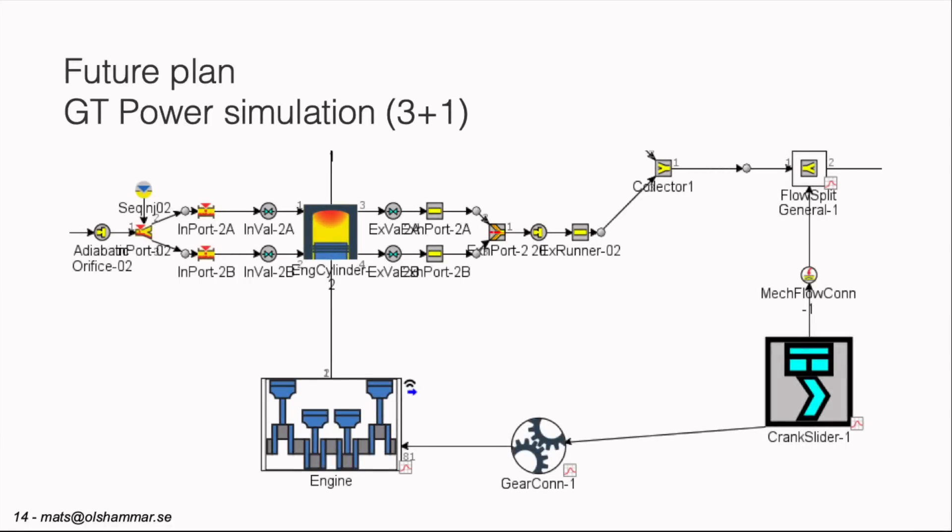And the future plan is to make new computer simulations in GT power. So a setup with three combustion cylinders would look like this. We only see one combustion cylinder here. But then we have from the crankshaft of that one we have a gearing connect one there going to a crank slider and the crank slider can regulate the volume in the flow. So this is a way to set that one up.